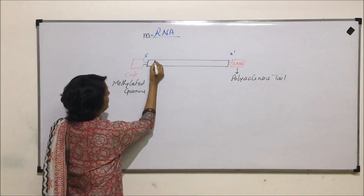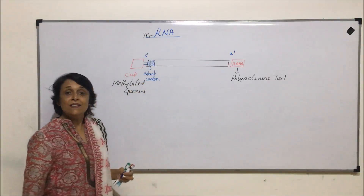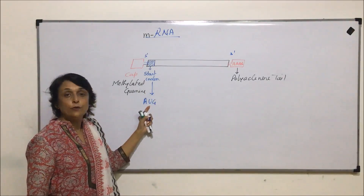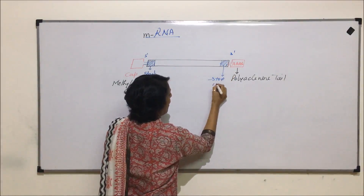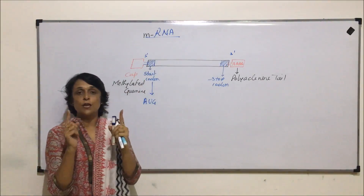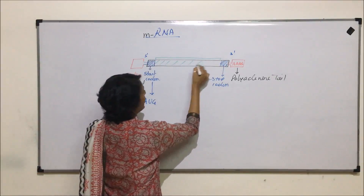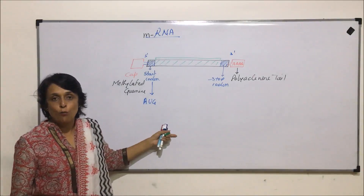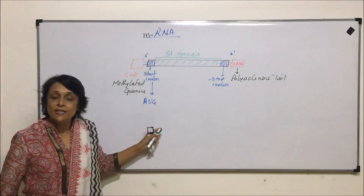The first structure present near the 5' end is the start codon, which is invariably AUG — written with U because this is RNA. The last element toward the 3' end is the stop codon, which can be any of the three stop codons. The entire part between the start and stop codon is made up of structural genes — the genes that will be translated into a protein. This is the complete structure of mRNA.